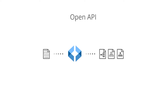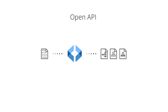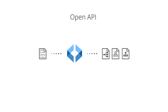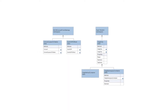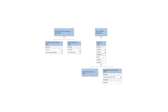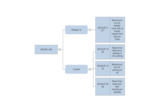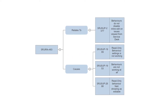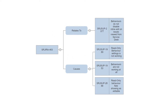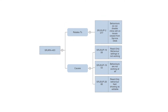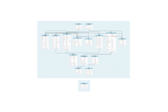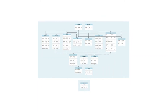The SmartDraw Open API allows you to represent data from an external source as a diagram. For example, you can build a class diagram from the source code, show the dependencies of an issue in Atlassian Jira, or visualize relationships in your database.